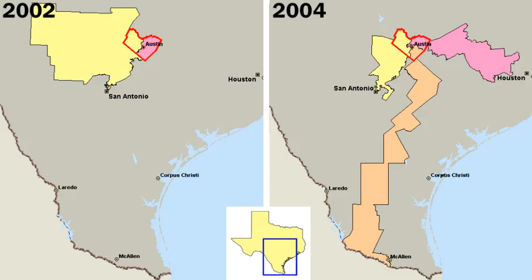By the 1920s, however, this boisterous folksiness had diminished. Municipal reforms, civil service reform, corrupt practices acts, and presidential primaries to replace the power of politicians at national conventions had all helped to clean up politics.